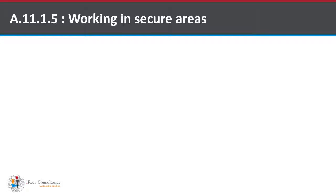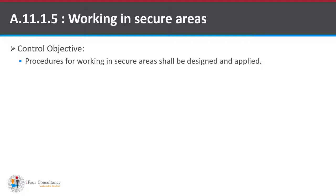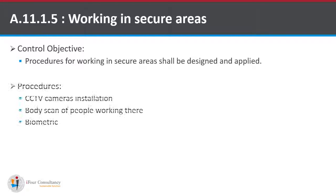Sub-control A.11.1.5 is Working in Secure Areas, such as Data Centers where critical information is stored. The control objective is that procedures for working in secure areas shall be designed and applied. These procedures may include CCTV camera installation, body scan of people working in secure areas like data centers, and biometric for two-factor authentication, password, passphrase, smart card, and swipe in/swipe out mechanisms.